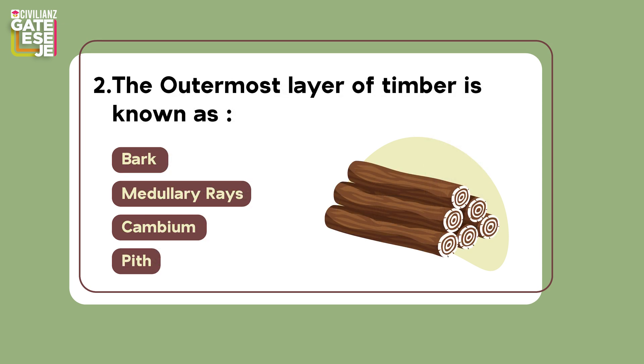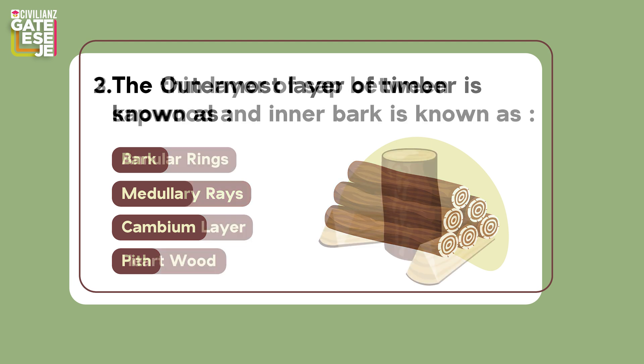Question 2: The outermost layer of timber is known as — (A) bark, (B) medullary rays, (C) cambium, (D) pith.